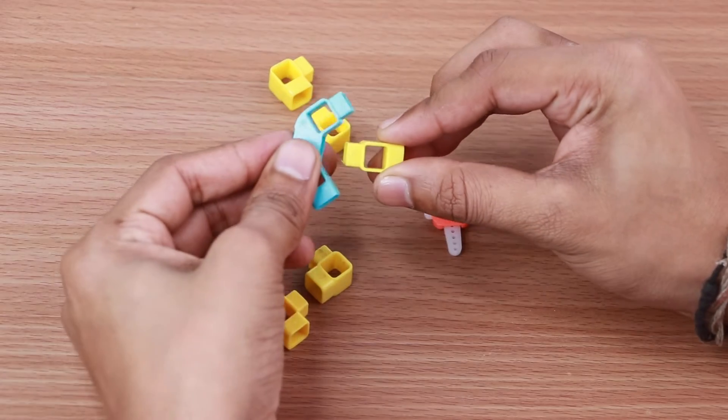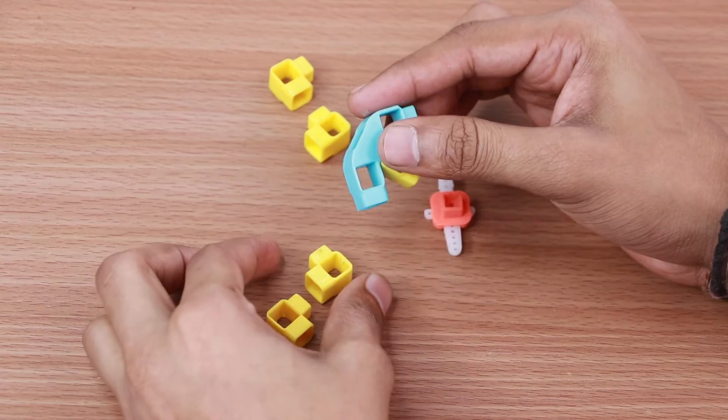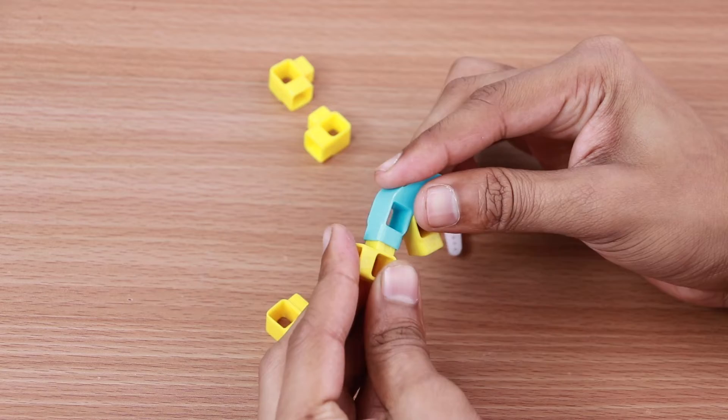Now attach one three-hole elbow, one hole beam and four one-hole elbows as shown.